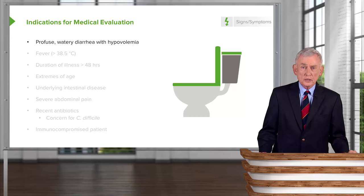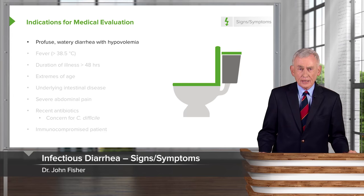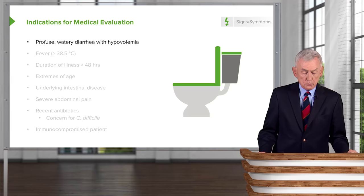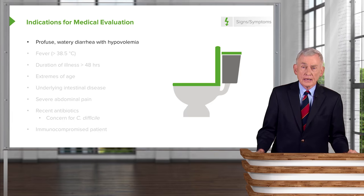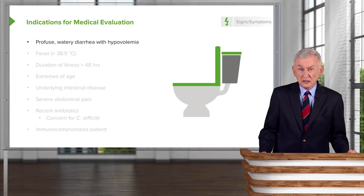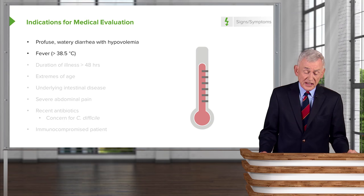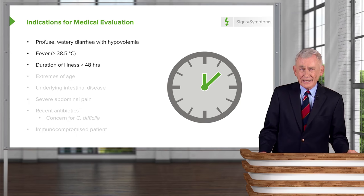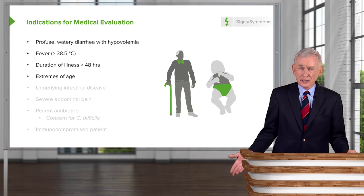Diarrhea is a pretty common disorder, and most people get an occasional episode every year without needing medical evaluation. So when does a person with diarrhea actually need to see a physician? That would be for profuse, watery diarrhea with hypovolemia — the patient has such volume depletion that when they stand up they feel dizzy or like they're going to faint. Certainly someone with definite fever greater than 38.5°C, or diarrhea lasting more than 48 hours, needs evaluation, as do babies and elderly folks.